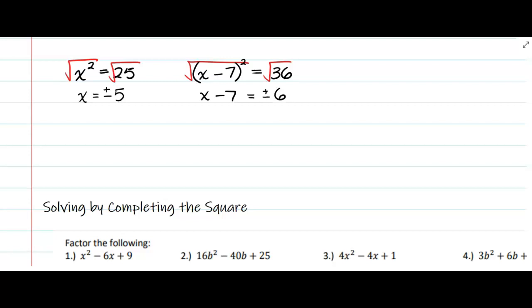x is not by itself because of the negative 7, so I would add 7 to both sides. x would be 7 plus or minus 6, which we then would have to break apart: 7 + 6, 7 - 6. And our answer would be 13 or 1.